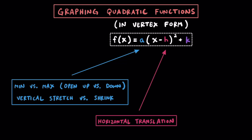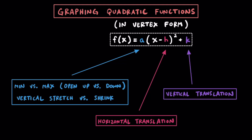The variable h lets us know what sort of horizontal translations we have. If h is positive then the vertex is going to be moved to the right, and if h is negative then the vertex is going to be moved to the left. Remember h also lets us know where the axis of symmetry or AOS is located. k lets us know what sort of vertical translations we have. If k is positive then the vertex is going to be moving up k units and if k is negative then the vertex is moved down k units. While h lets us know the x-coordinate of the vertex, k lets us know the y-coordinate.